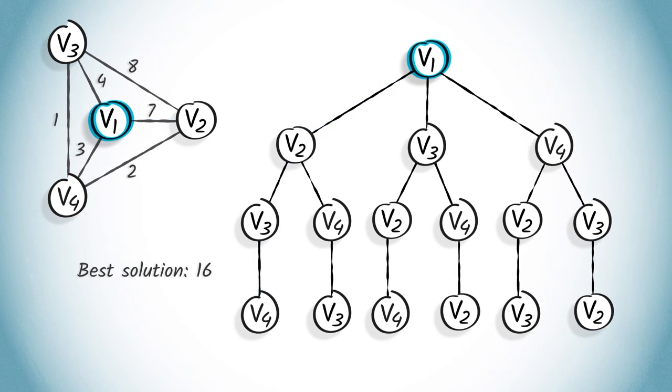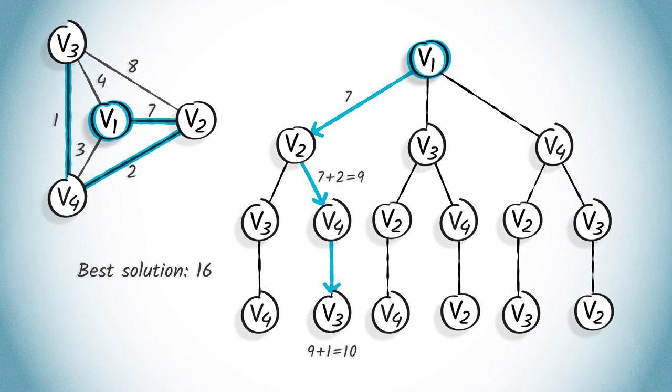The next explored solution is v1, v2, v4, v3, which has a cost of 10. This solution is better than the currently known best one, v1, v2, v3, v4. So, this new solution is stored in memory as the current best solution.